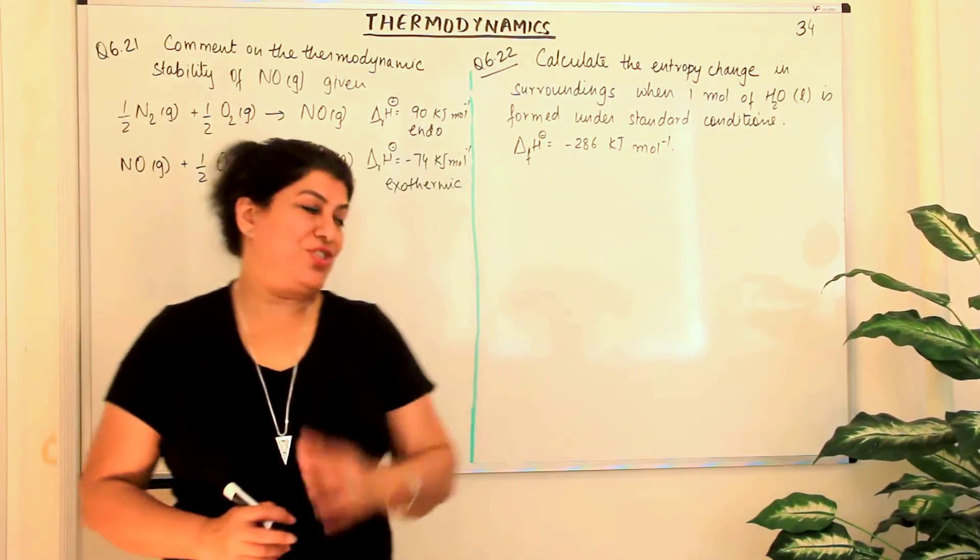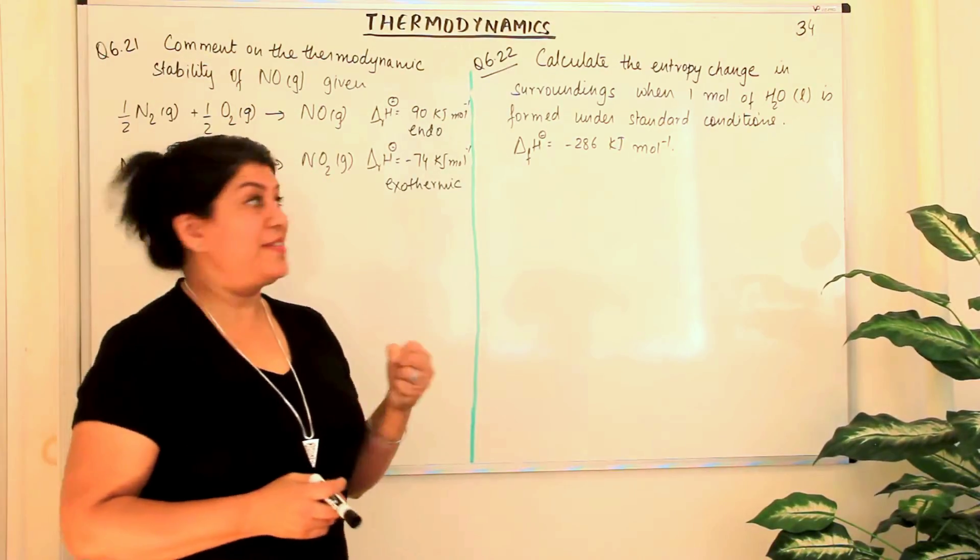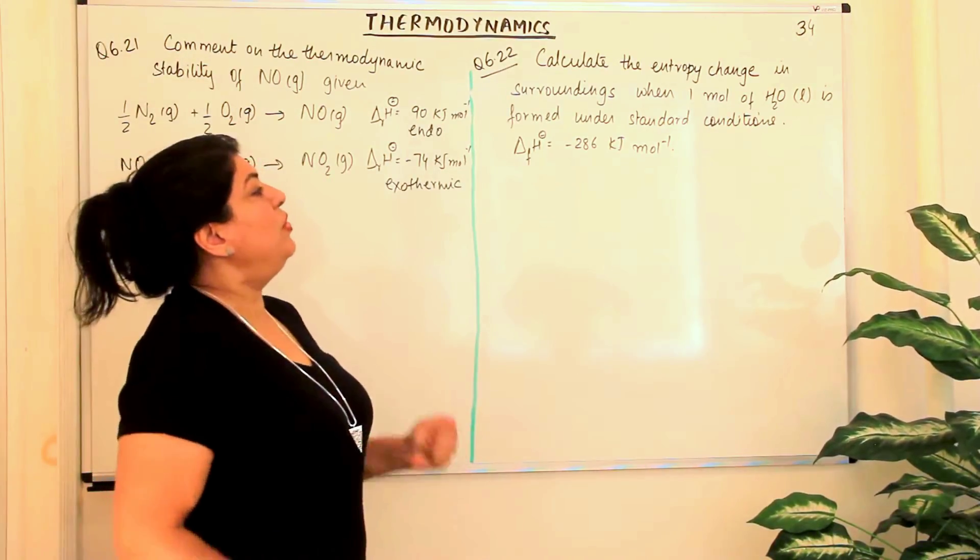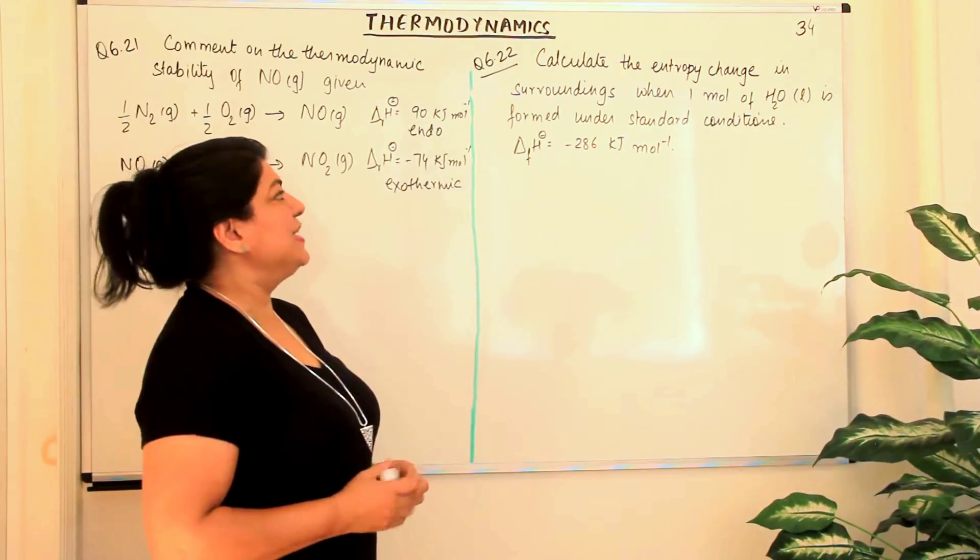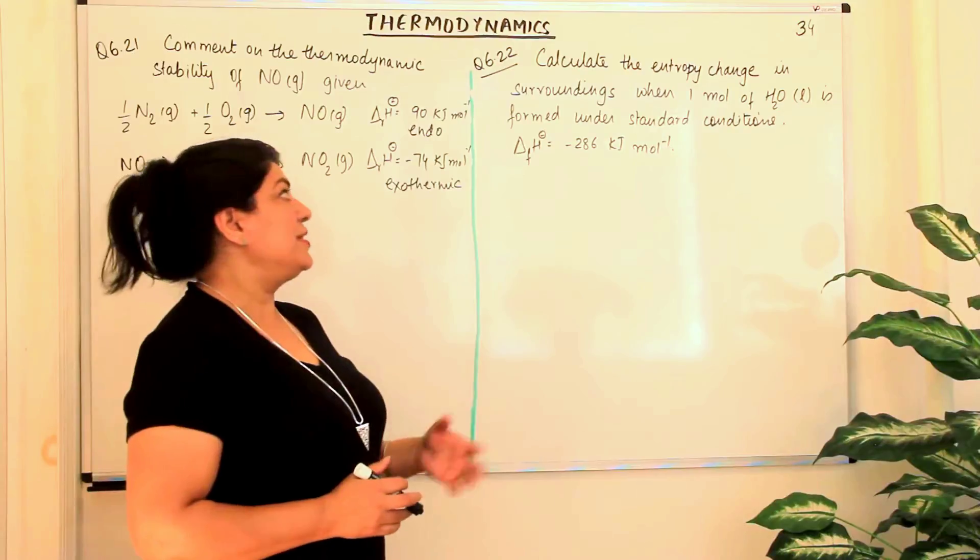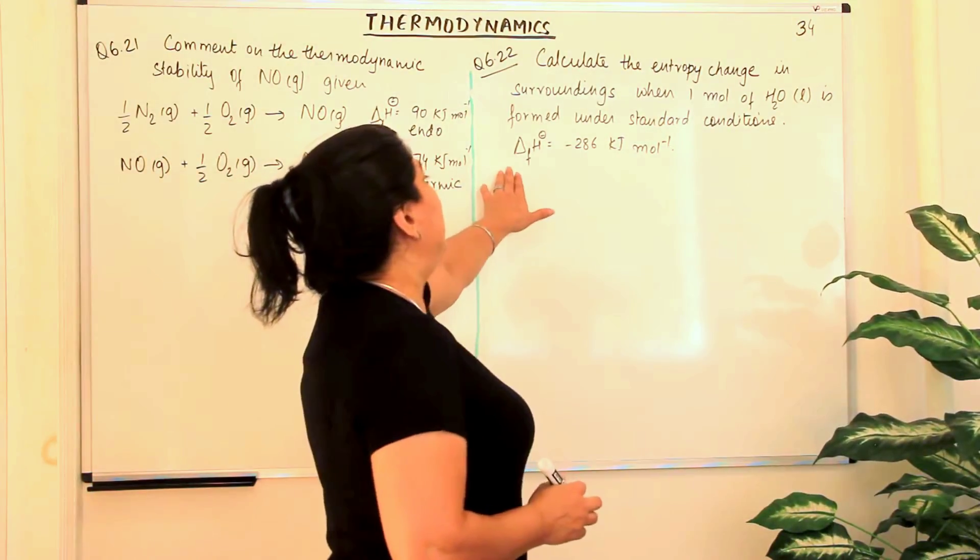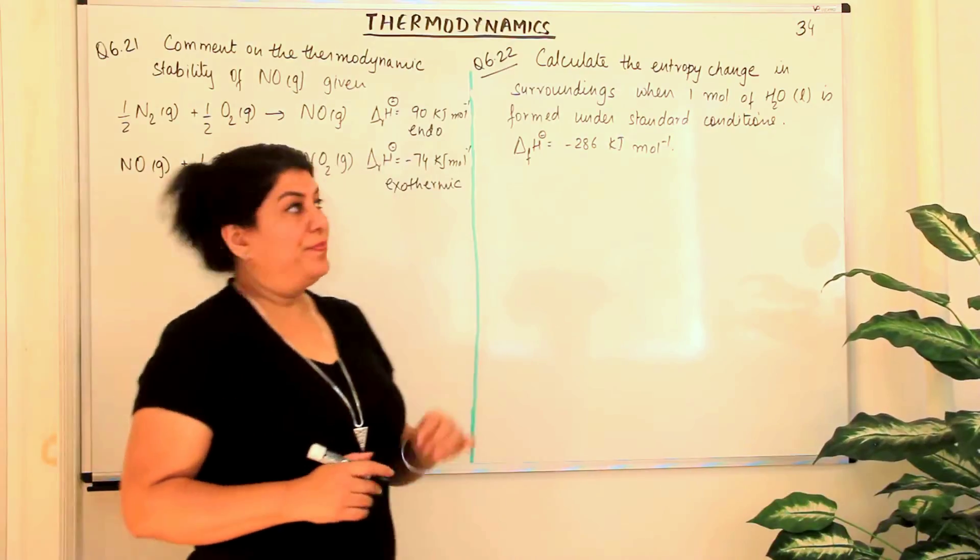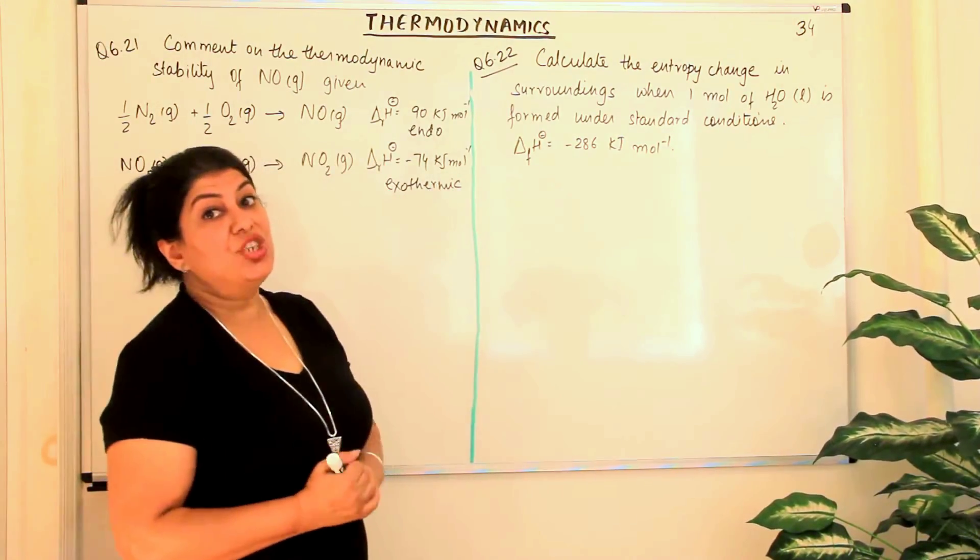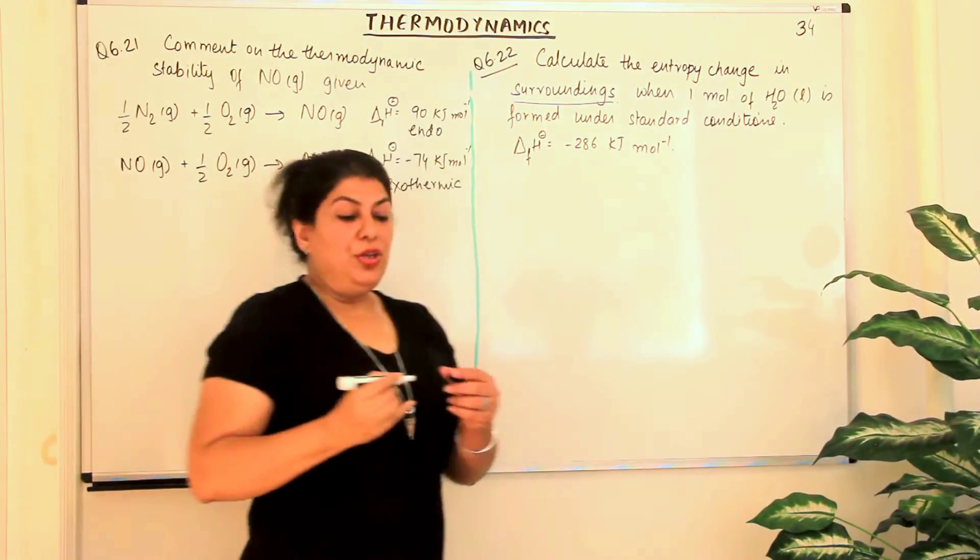Now, the last question of this chapter. You have to calculate the entropy change in the surroundings when one mole of water in the liquid state is formed under standard conditions. When you say standard conditions, it means the temperature is 298 Kelvin. The enthalpy of formation is given to us. Now you have to calculate the entropy change in the surroundings.